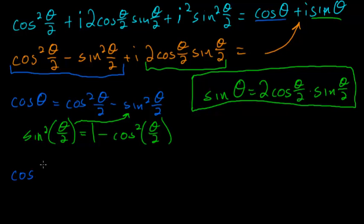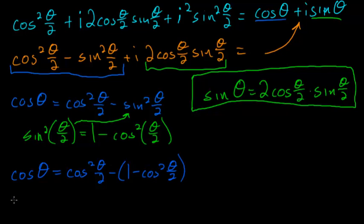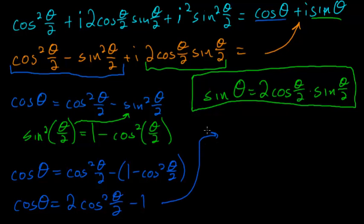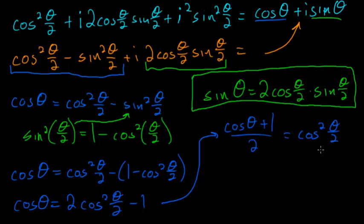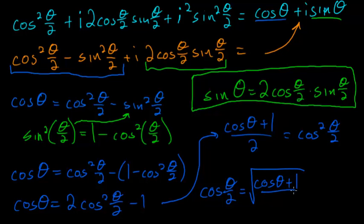The cosine of theta is equal to the cosine squared of theta over 2 minus (1 minus the cosine squared of theta over 2), which simplifies to twice the cosine squared of theta over 2 minus 1. Solving for the cosine squared of theta over 2, I add 1 to each side and divide by 2, giving the cosine of theta plus 1 divided by 2 equals the cosine squared of theta over 2. Taking the square root of each side gives the half angle identity.